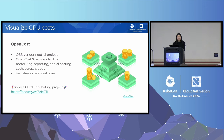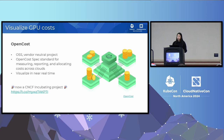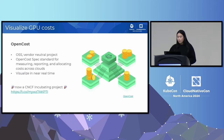Now that we have monitoring in place and we've seen our GPU metrics, let's visualize the costs using OpenCost. OpenCost is an open source, vendor-neutral CNCF project — just two or three weeks ago it was promoted from CNCF sandbox to incubation, which is quite exciting. OpenCost provides a standardization and spec for measuring, reporting, allocating, and visualizing your cluster infrastructure costs across cloud environments. You can slice and dice cluster costs by Kubernetes abstractions like namespace, labels, containers, or any Kubernetes construct.